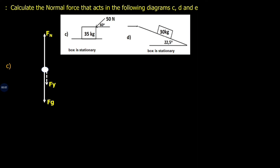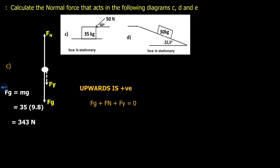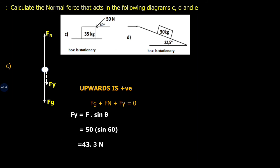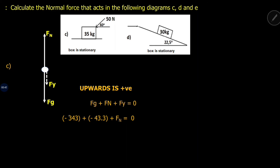This leaves us with three forces: the normal force, the vertical component of the 50 Newton force, and Fg. The upward direction is positive. We equate the three forces to zero. Fg equals mg — 35 times 9.8 equals 343 Newtons. Fy equals F sin theta — 50 times sin 60° equals 43.3 Newtons. Substituting, with Fg negative and Fy negative, gives Fn equals 386.3 Newtons upward.